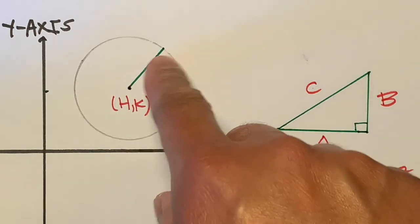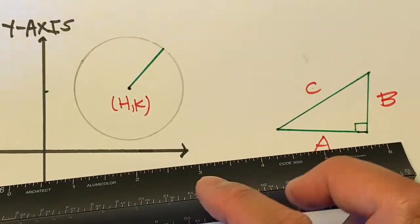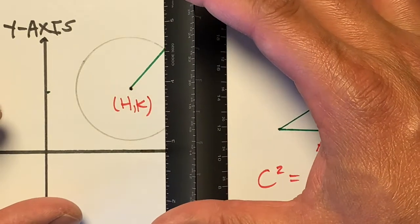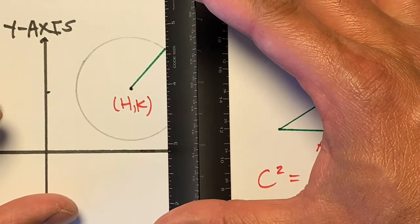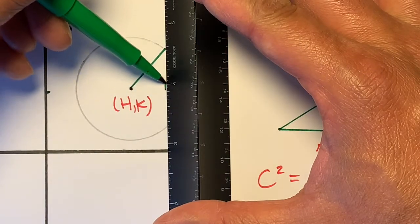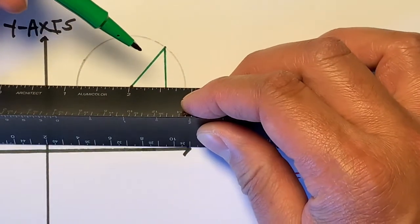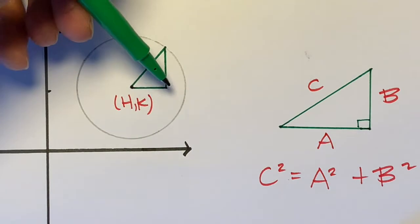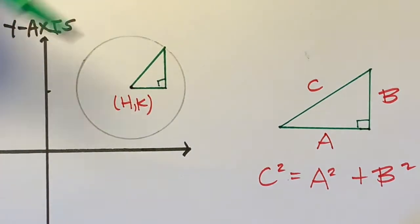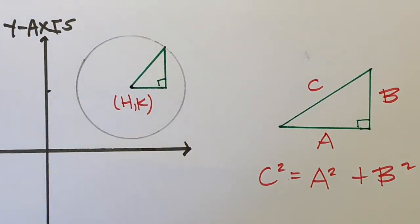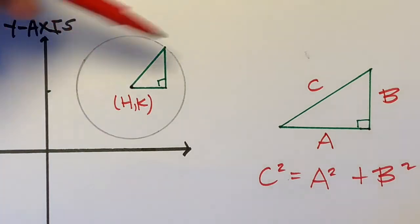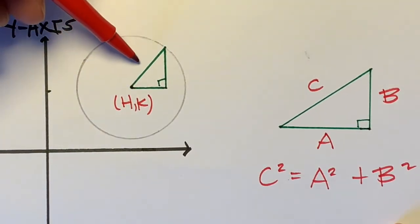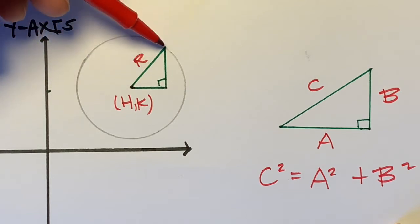We're going to take this radius, and that's going to serve as our hypotenuse. We're going to draw a line going straight down to here and draw another line that is horizontal to here, perpendicular to this line. We have a right triangle. This right triangle is going to help us figure out the equation of a circle. This is our radius, so we're just going to call this R. The distance from the center to the point on a circle is the radius.